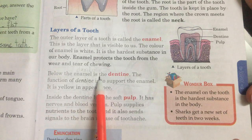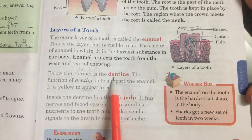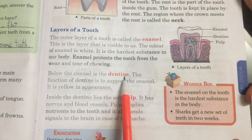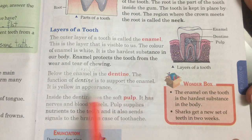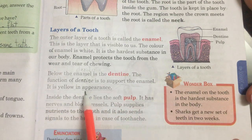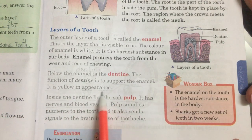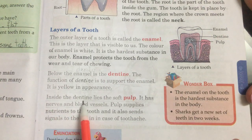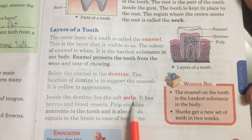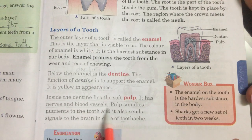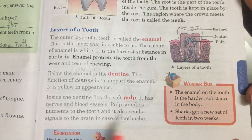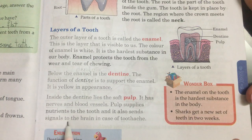Below the enamel is dentine. The function of dentine is to support the enamel. It is yellow in appearance. Inside the dentine lies the soft pulp. It has nerves and blood vessels. Pulp supplies nutrients to the tooth and also sends signals to the brain in case of toothache.